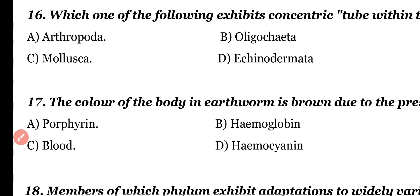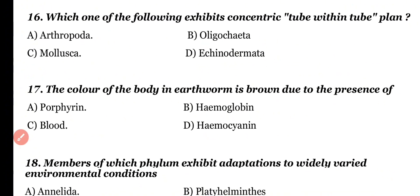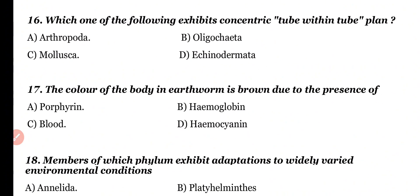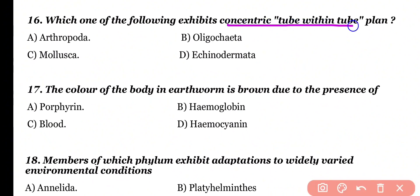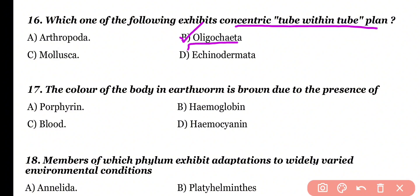Question number 16. Which one of the following exhibits a tube-within-tube body plan? Arthropoda, Oligochaeta, Mollusca, or Echinodermata. Correct answer is option B. Oligochaeta exhibits the tube-within-tube body plan.